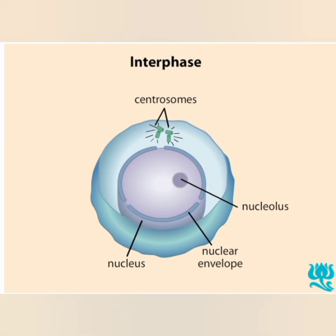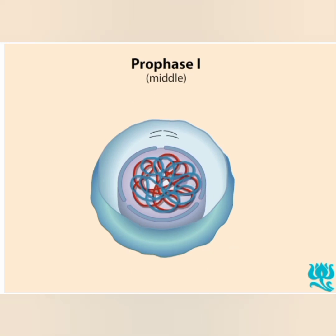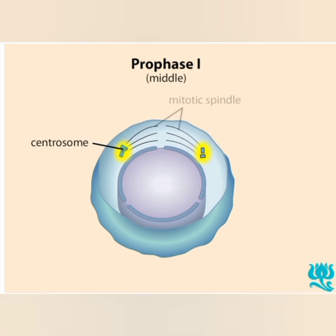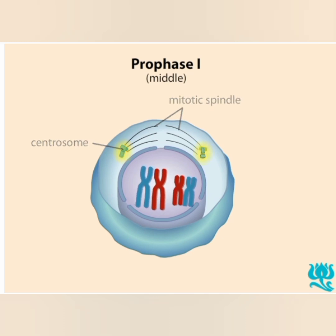Meiosis consists of two cell divisions, meiosis 1 and 2. As the diploid cell enters the first phase of meiosis 1, called prophase 1, its chromatin condenses into discrete chromosomes. The cell has two centrosomes, which form the mitotic spindle as the centrosomes migrate to opposite poles of the cell.